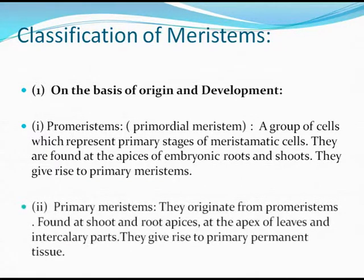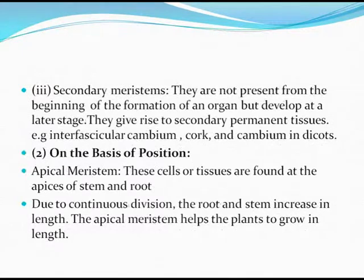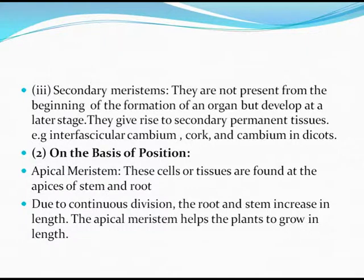Primary meristems originate from the promeristems found at the shoot and root apices, at the apex of leaves, and at intercalary paths. They give rise to primary permanent tissue. Secondary meristems are not present from the beginning of organ formation but develop at a later stage; they give rise to secondary permanent tissue. Examples include interfascicular cambium, cork cambium, and cambium in dicots.